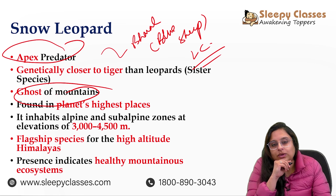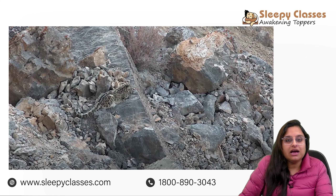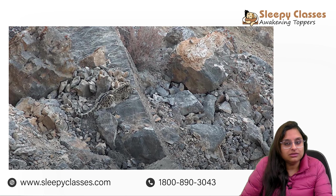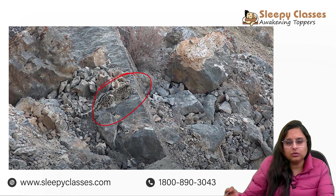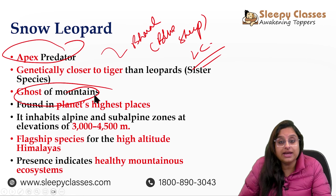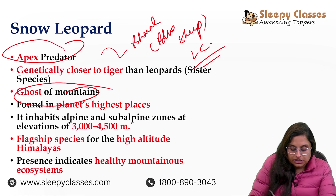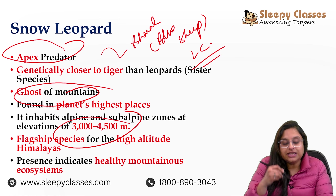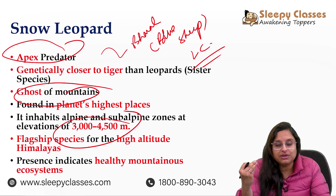Ghost of the mountains kaha jaata hai kyunki ye illusive hai, aapko dikhta nahi. Yahaan pe ek achi image hai — can you spot a snow leopard here? It's very difficult to spot — ghost, very difficult to spot, illusive, solitary hai ye. Toh aasaani se nahi dikhta. Aapko alpine, sub-alpine zones mein milta hai — 3,500+ meters. Highest places of the planet. It is a flagship species of high altitude Himalayas.